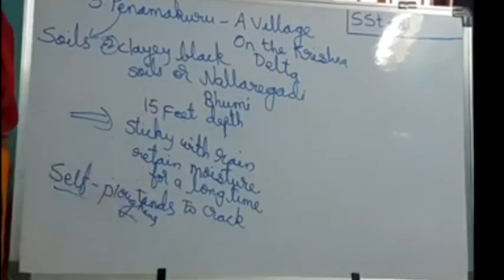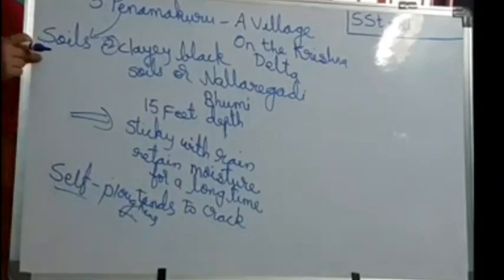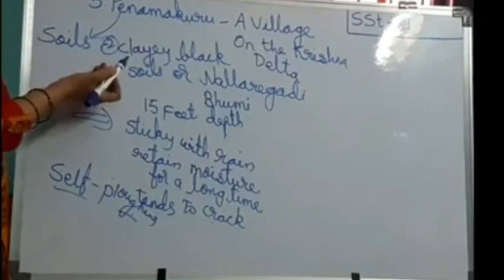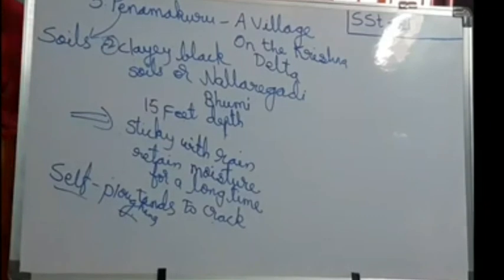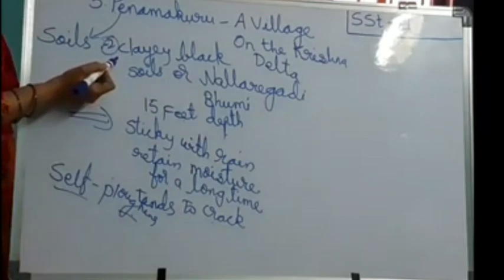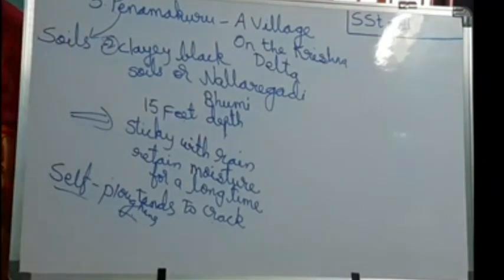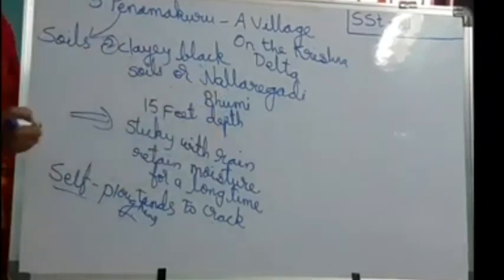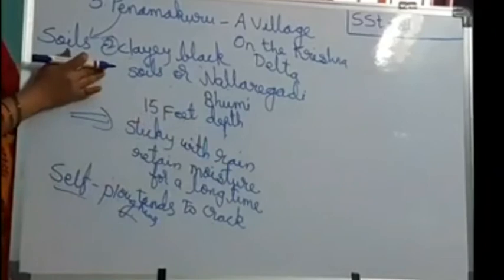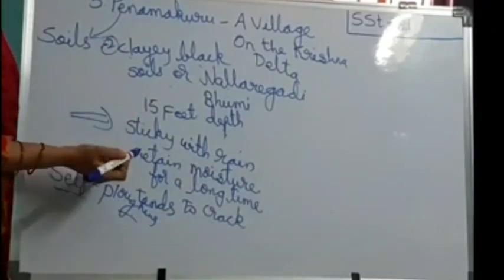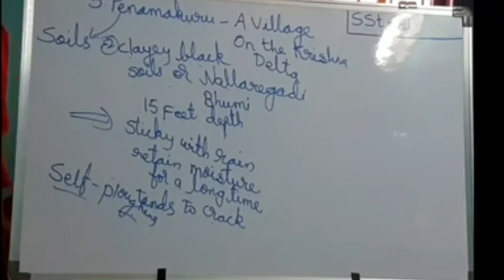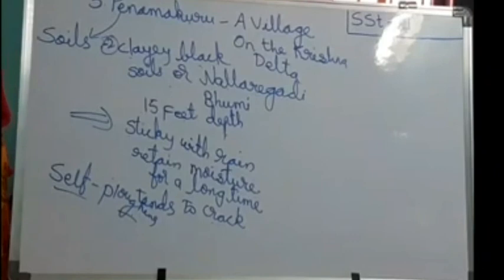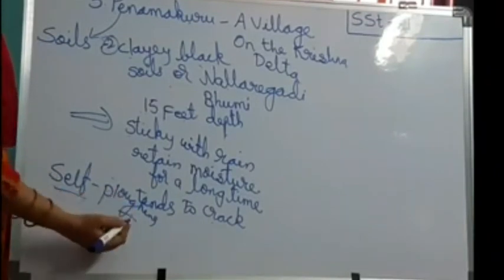To repeat: alluvial black soil, also called Ondra Bhoomi, is very fertile, holds water for a long time, and contains nutrients. Second, clay black soil, also called Nallaregadi Bhoomi, is found in Penamakuru up to 15 feet depth, is very sticky when it rains, holds water for a long time, and when it dries, cracks appear. No need of ploughing — that's why it is called self-ploughing.